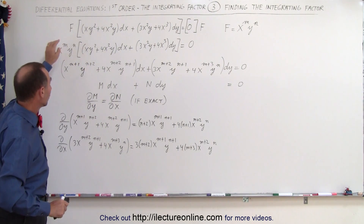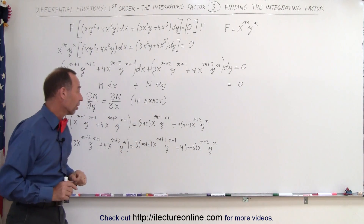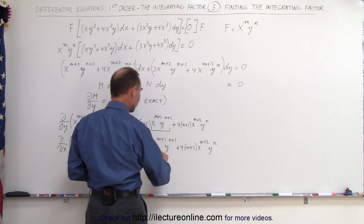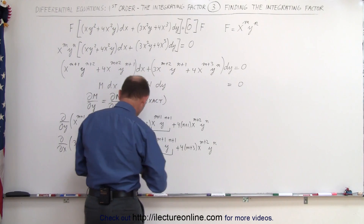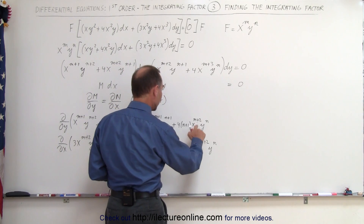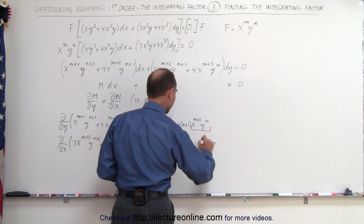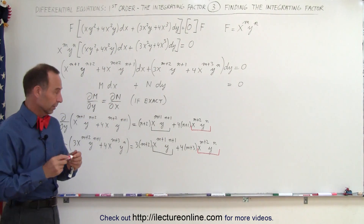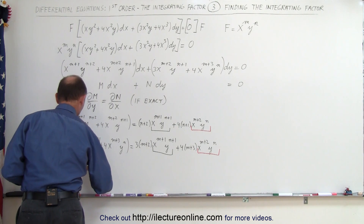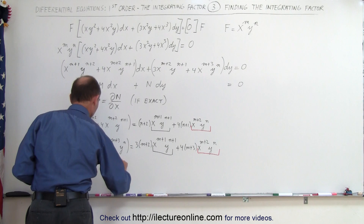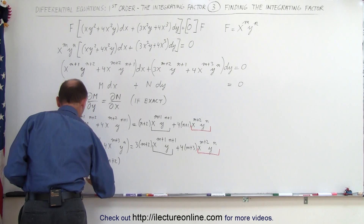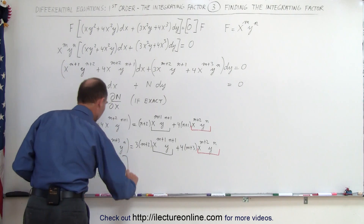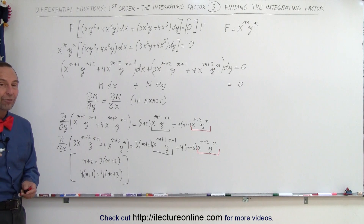If this is exact, these two expressions must be equal to each other. Notice that here we have x^(m+1) * y^(n+1) matching x^(m+1) * y^(n+1), and x^(m+2) * y^n matching x^(m+2) * y^n. That means the coefficients must match: (n+2) must equal 3(m+2), and 4(n+1) must equal 4(m+3). So we have two equations and two unknowns, which we can algebraically solve for m and n.